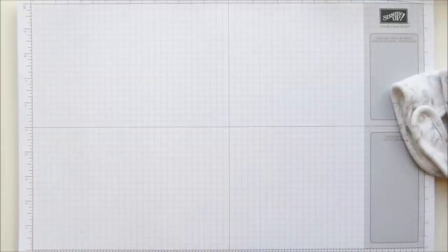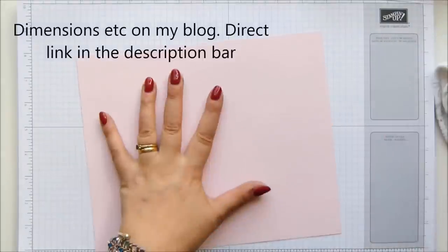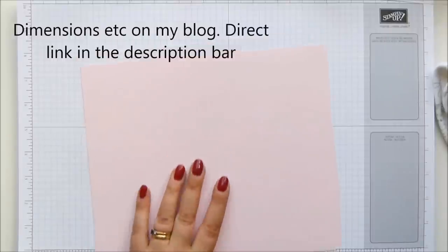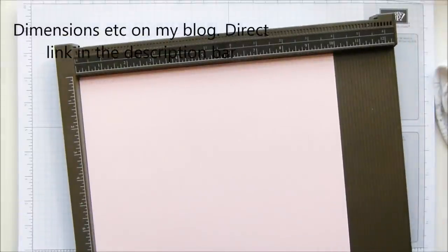Okay, you need a piece of cardstock that is eight and a quarter by ten inches. There we go, eight and a quarter by ten inches. This one was soft sky. This one is pink pirouette, so eight and a quarter by ten inches or 21 by 25 and a half centimeters.